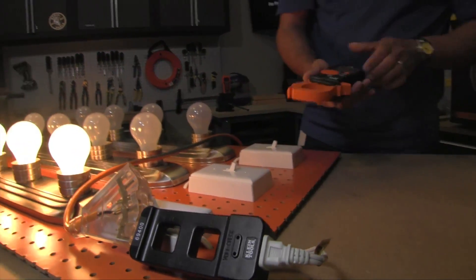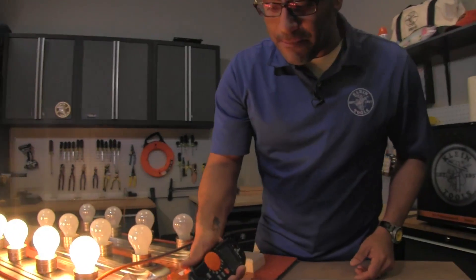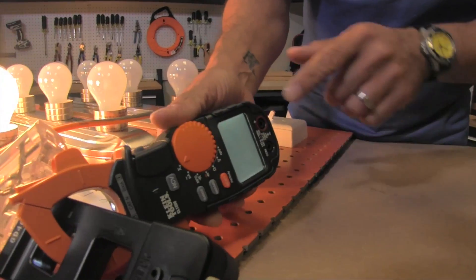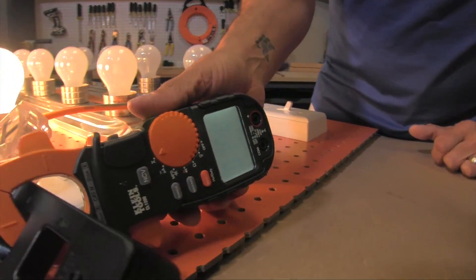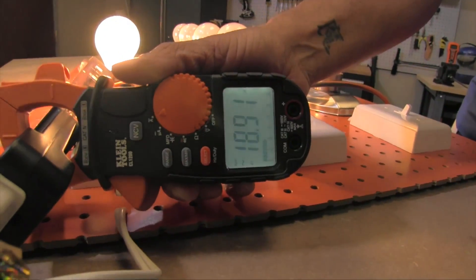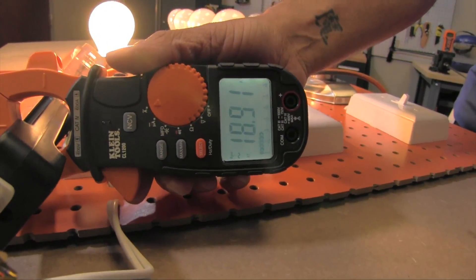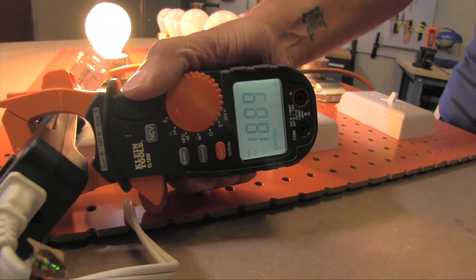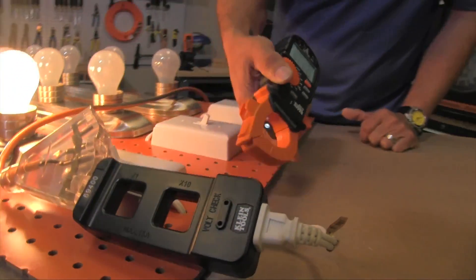So for example, if I clamp on right now with these lights on, you'll see that I'm pulling 1.78 amps. Right now if I were to move this to the times ten, it goes up to 18.9, so basically just multiplying the signal times ten to give you a little bit better resolution.